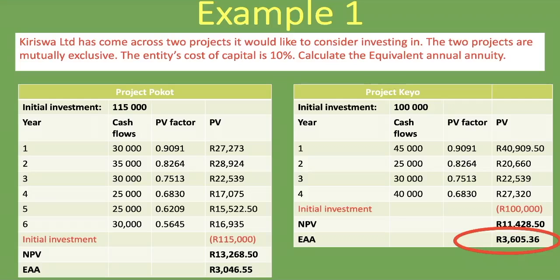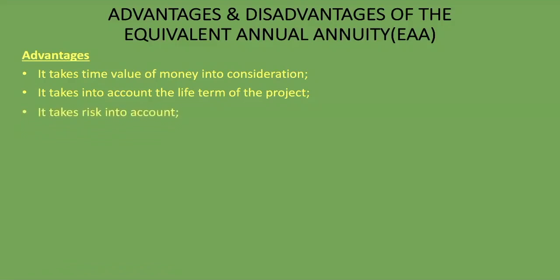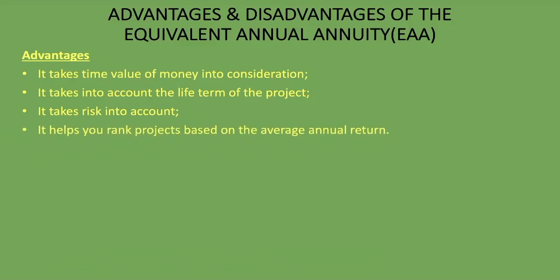The advantages of the equivalent annual annuity: it takes the time value of money into consideration; it takes into account the life term of the project, which makes it different from net present value; it takes risk into account through the cost of capital; and it helps rank projects based on average annual return.